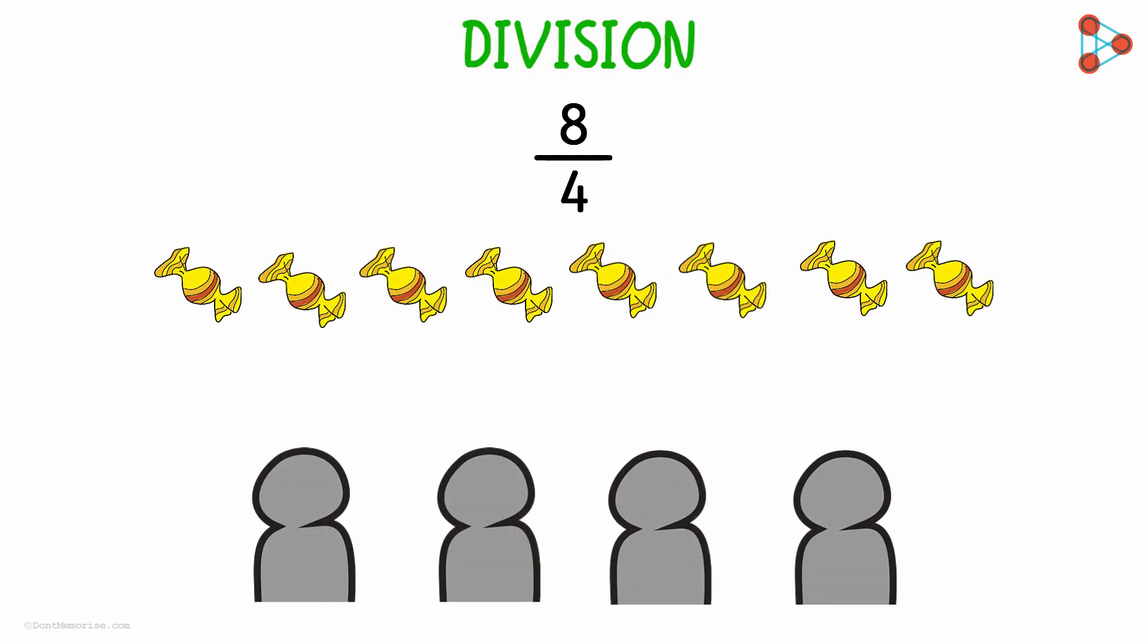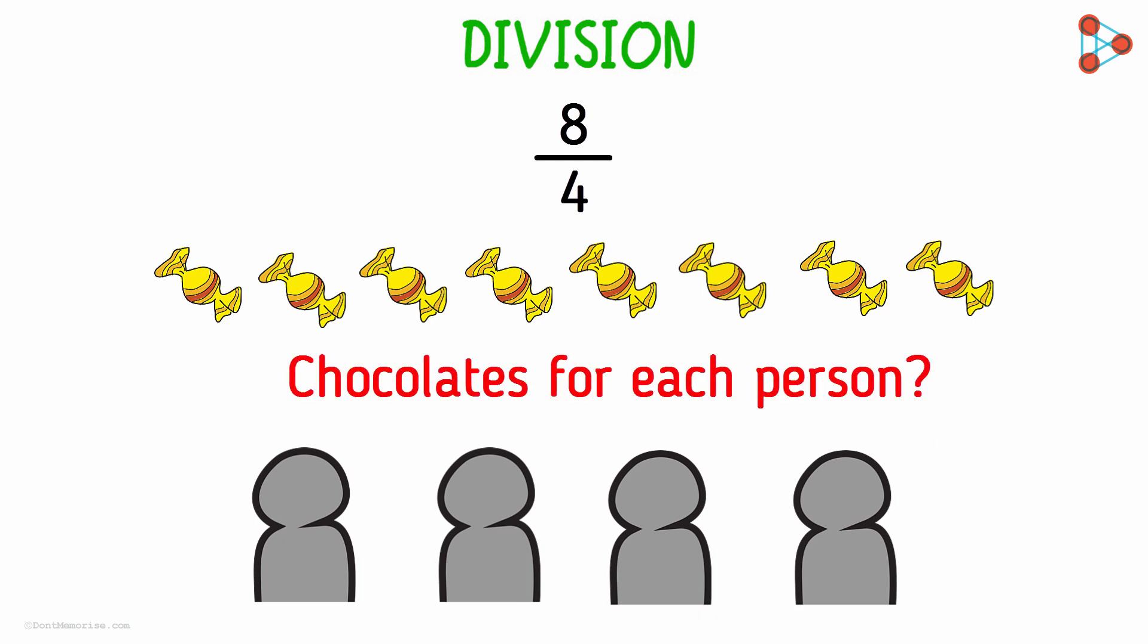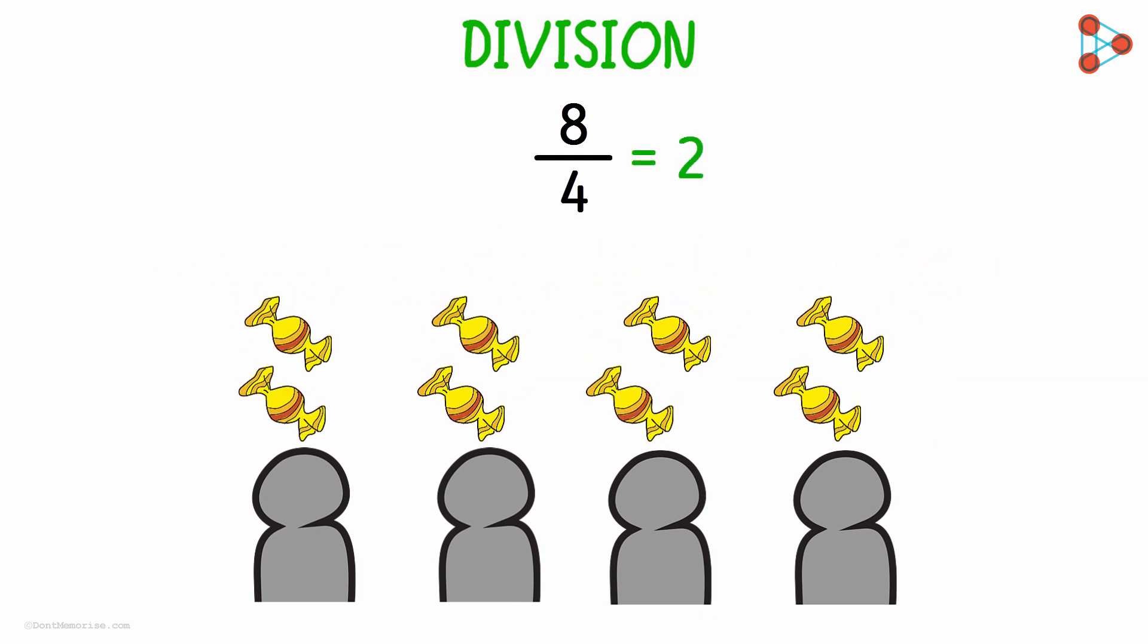When we divide a number 8 with say 4, what actually are we doing? Imagine this scenario. There are 8 chocolates and 4 people. And we want to distribute these 8 chocolates to 4 people such that everyone gets equal number of chocolates. How many chocolates will a single person get? Each person will get 2 chocolates. How did we get this 2?